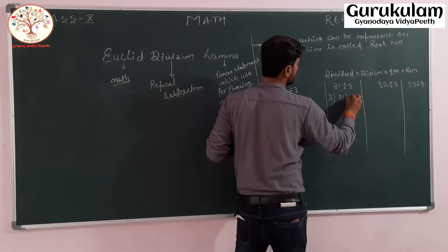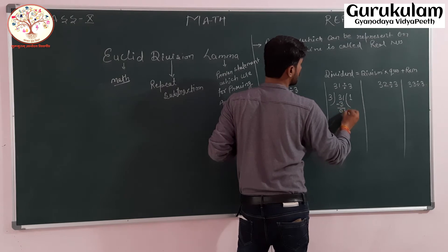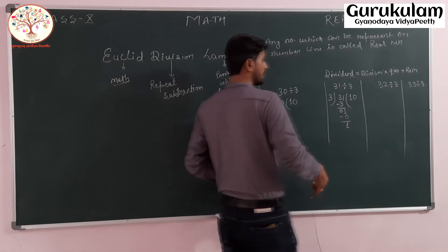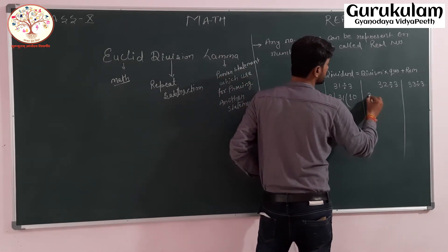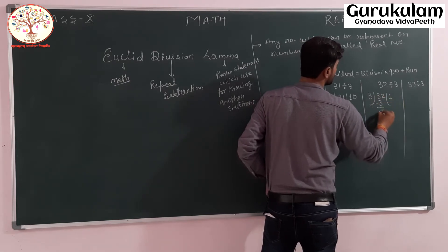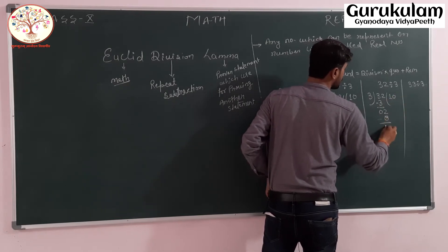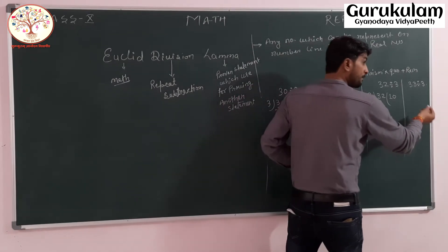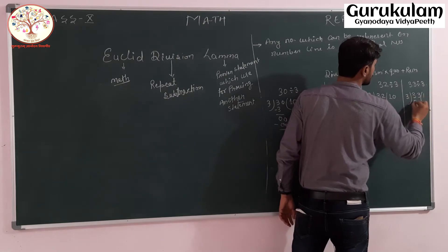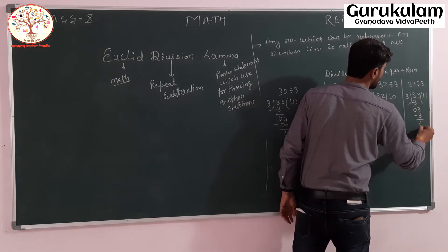For 31 divided by 3: quotient is 10, remainder is 1. For 32 divided by 3: quotient is 10, remainder is 2. For 33 divided by 3: 3 ones are 3, minus 0, 3 ones are 3, remainder is 0, quotient is 11.